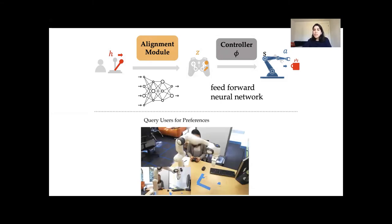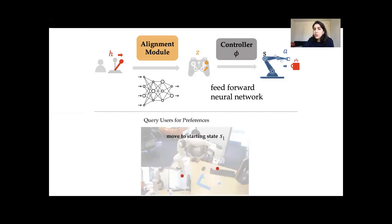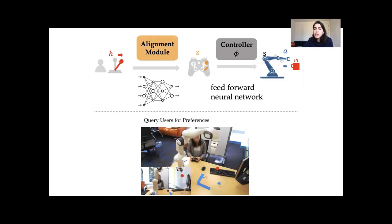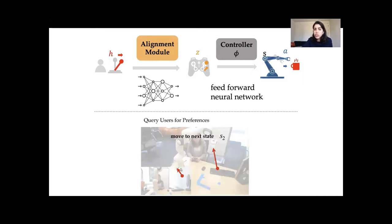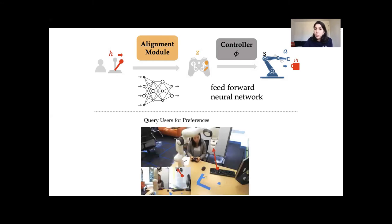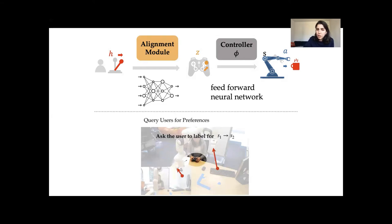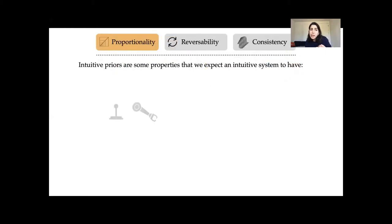The question is how to train this alignment module — how to learn human preferences. We train it using some supervised data from human preference queries plus semi-supervised priors. The supervised data comes from preference-based learning: we start the robot in state S1, move to state S2, then ask the person what joystick input they would use to make that transition. These preference queries provide supervised data to understand user intent. Since the alignment module is a feed-forward neural network, some human data alone isn't enough, so we also incorporate intuitive priors as semi-supervised structure.